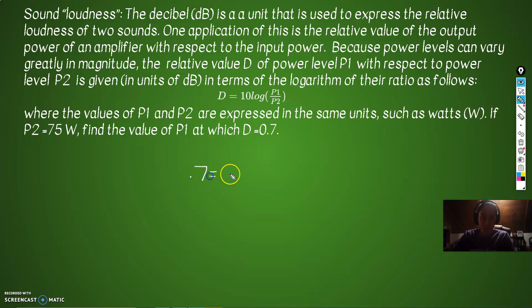So D is equal to 0.7. 0.7 = 10 log(P1/75). So we're going to find P1, and P2 is 75. We're all set up. We're going to try to solve this for P1. First things first, clear out the clutter. So divide everything by 10. This will give us 0.07 on the left. On the right, we'll just have log of P1 over 75.